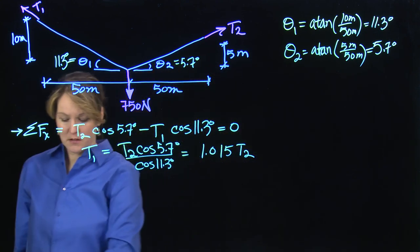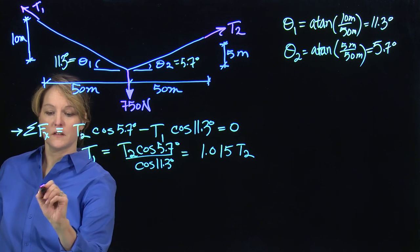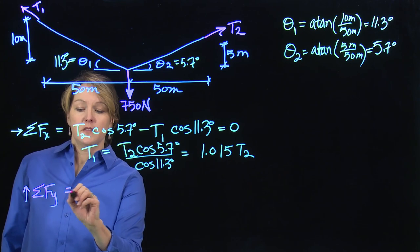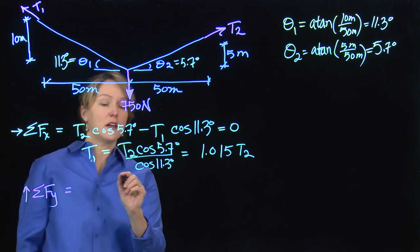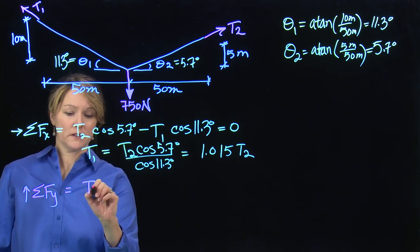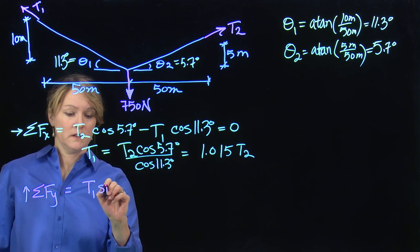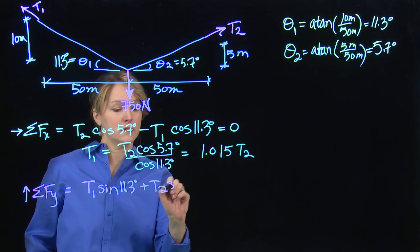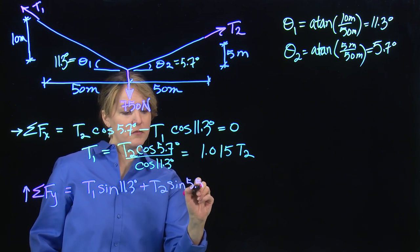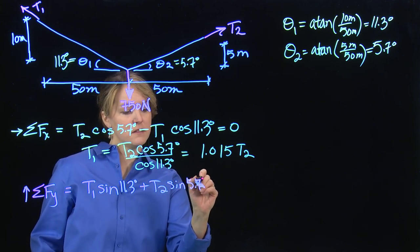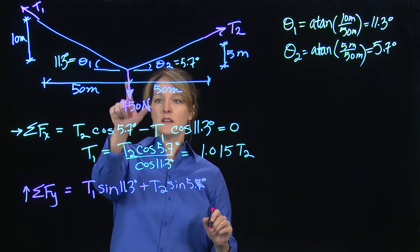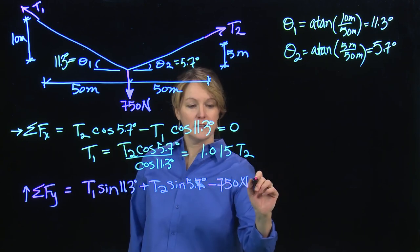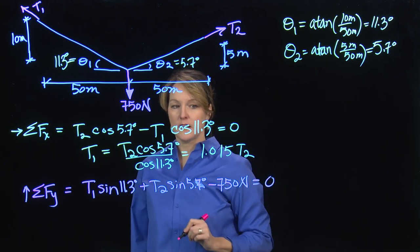And now I'm going to move on and do vertical equilibrium. So I will sum my forces in the y direction. And I have T1 and T2, the sine components acting vertically. So T1 sine of 11.3 degrees, plus T2 sine of 5.7 degrees. And then acting downward is this 750 newtons. And set that equal to zero.